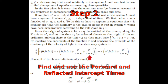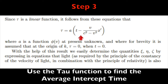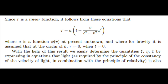Step two is to define the forward and reflected intercept times. Einstein does this when he invokes his tau function. Notice that when Einstein calls his tau function in three different places, he uses the forward and reflected intercept times. Step three: although Einstein didn't understand this, the tau function returns the average intercept time. The average intercept time has nothing to do with the position of a moving system — it describes the average of the forward and reflected intercept times, both of which are associated with an oscillating system.